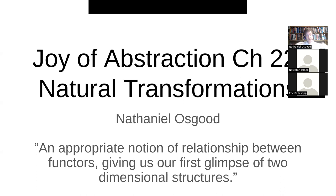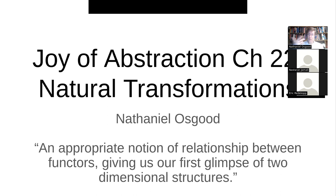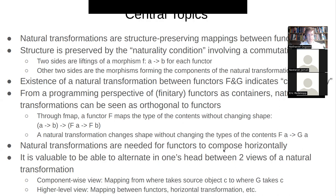Eugenia Cheng comments that natural transformations give an appropriate notion of relationship between functors — between these structure-preserving mappings between categories. She says they give us our first glimpse of two-dimensional structure: they whisper to us of higher categories, where we not only have objects and relations between them, but relations between those relations.